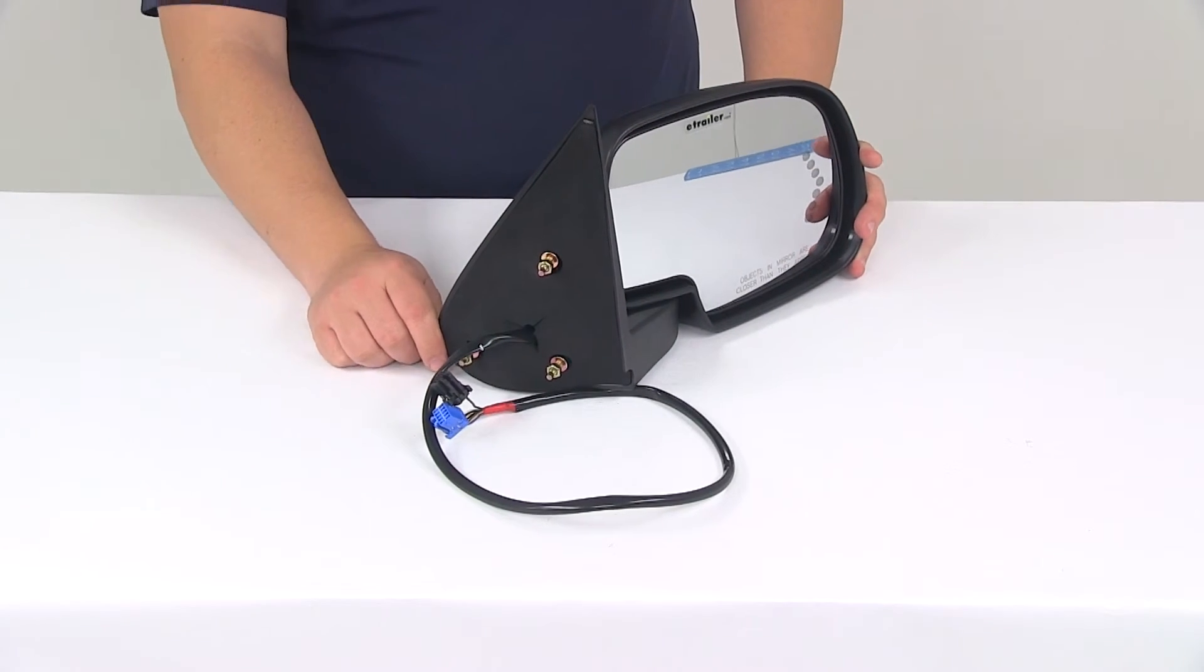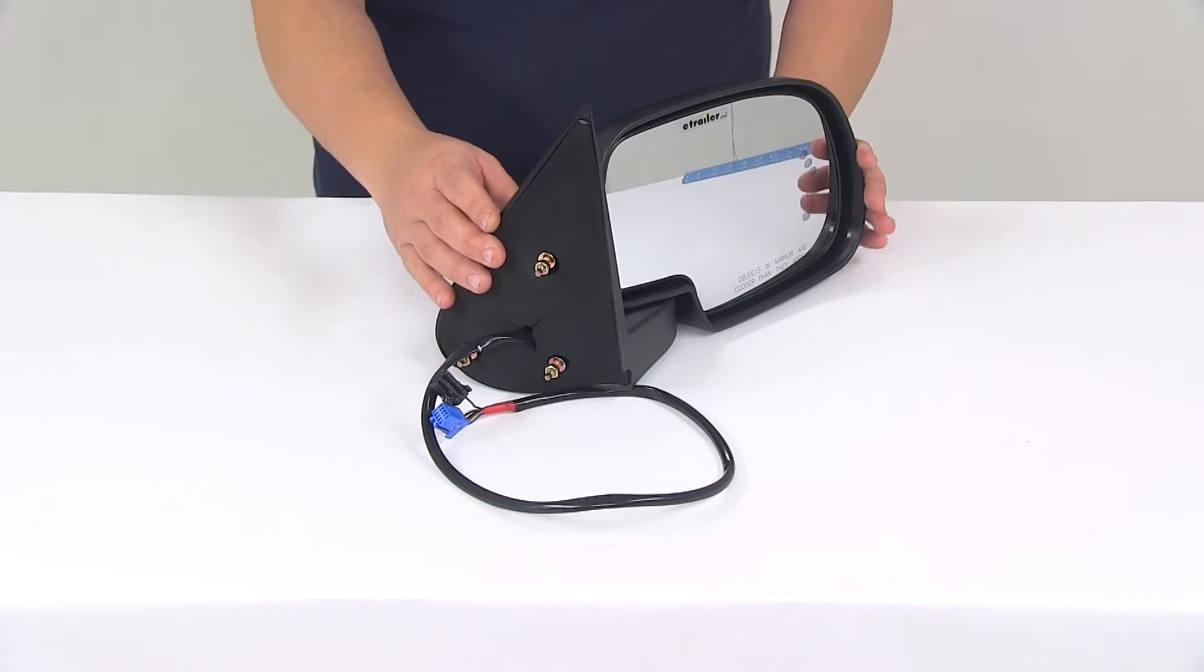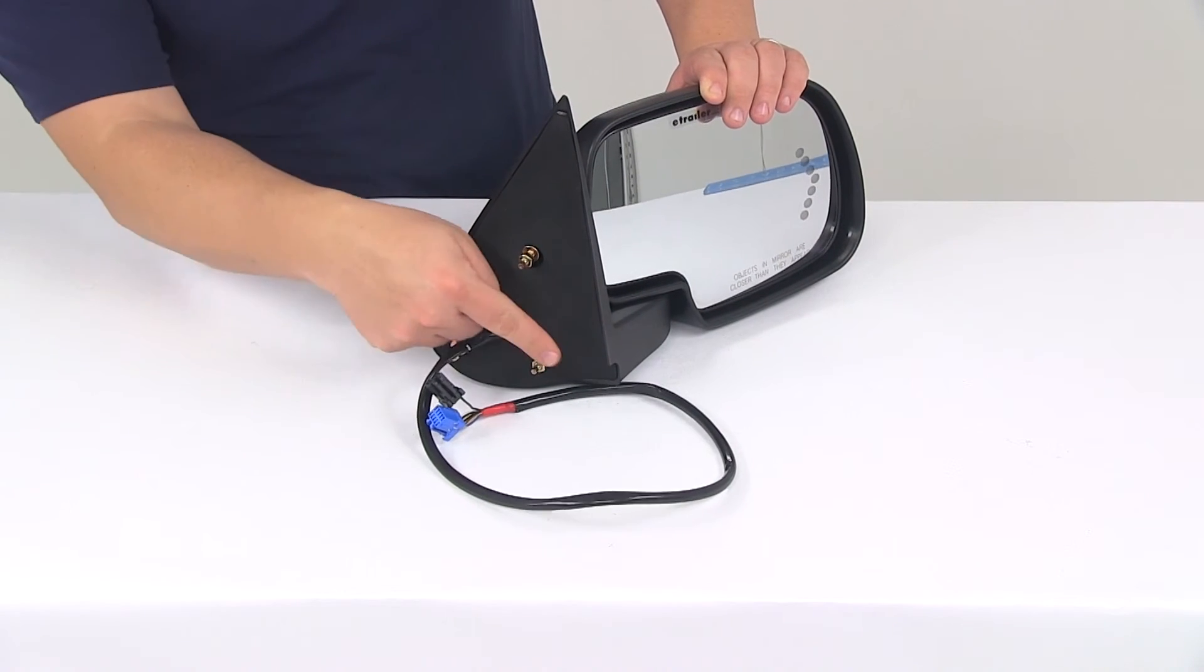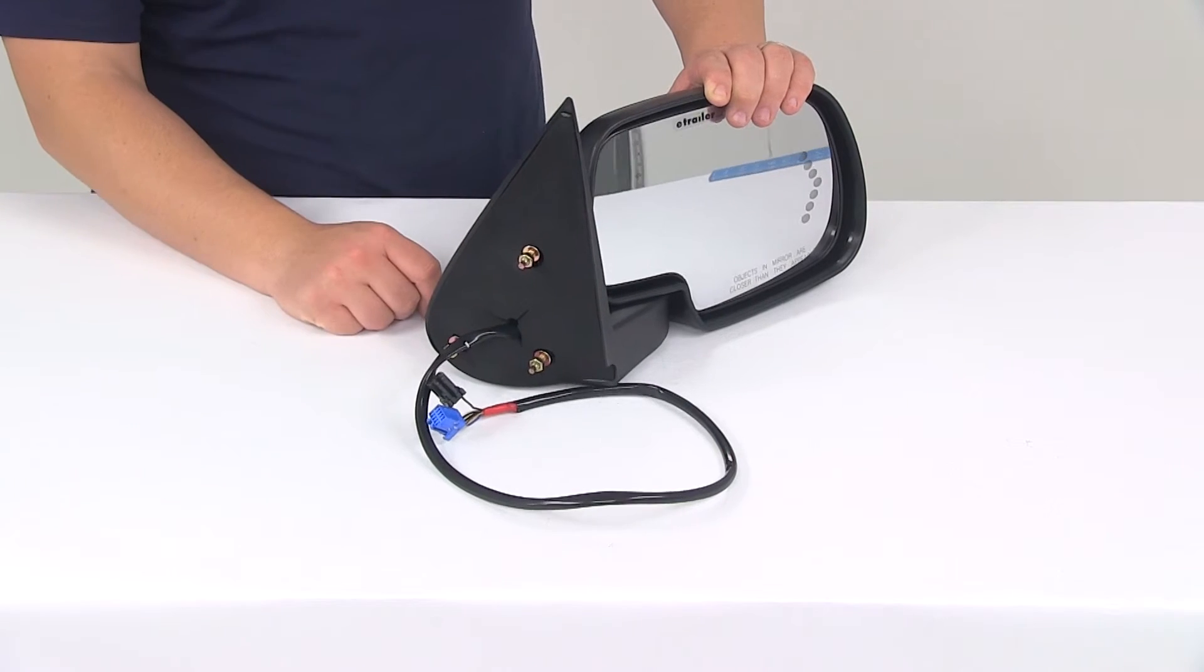It's an easy no-drill installation. It uses the same footprint and mounting points as the factory mirror. You have the three mounting studs and it comes with three nuts, one for each stud.